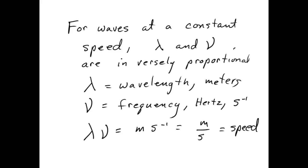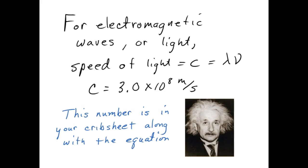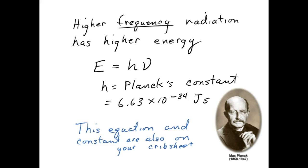For waves at a constant speed, lambda and nu, wavelength and frequency, are inversely proportional. So as the wavelength gets bigger, the frequency gets smaller. In fact, we can write an equation for it. Lambda times nu is equal to the speed. Look at the units. This is in meters, this is in per second, and then I'll have meters per second. Check out these units on frequency. Seconds to the negative one is usually how we write it, because to say per second is sort of awkward. It's so awkward that a lot of times people call it something else entirely, the hertz, but it just means seconds to the negative one, or per second. For electromagnetic waves, or light, the speed is always going to be three times ten to the eighth meters per second. It's constant. It's given the letter C, because Einstein gave that letter to it. This equation and this number are on your crib sheet. You don't need to memorize it.